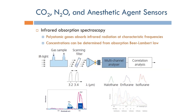The way we measure all gases involved with an anesthesia machine, including carbon dioxide, nitrous oxide, and anesthetic agents, we use something called infrared absorption spectroscopy. Infrared absorption spectroscopy relies on the fact that polyatomic gases absorb infrared radiation at characteristic frequencies.